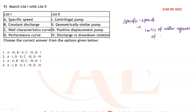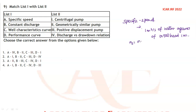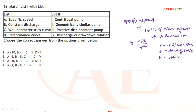Against a total head of one meter — this is known as the specific speed of the pump. It can be represented by the formula: Ns = N√Q / H^(3/4). Here N represents the speed in RPM, and Q represents the discharge in cubic meters per second.